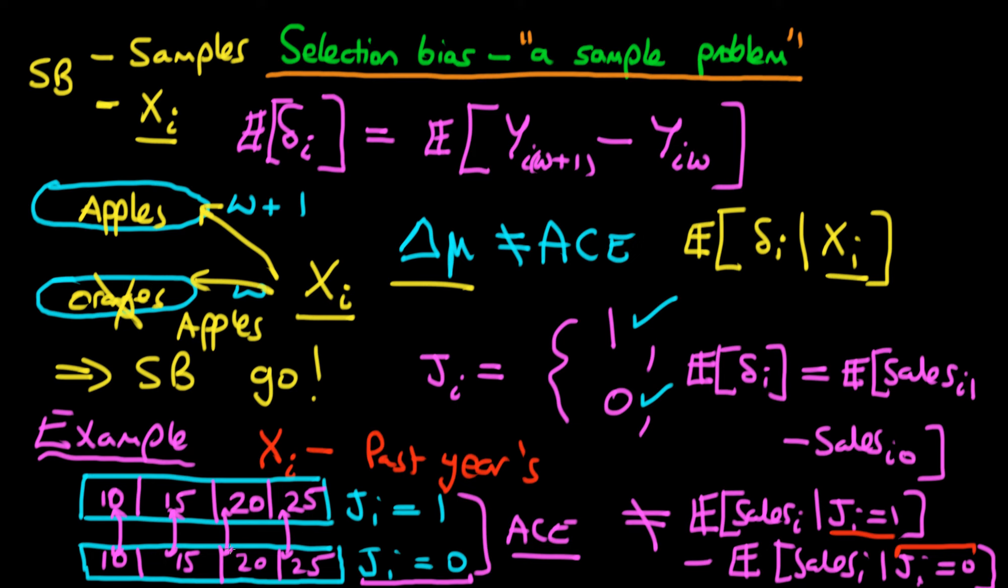So the idea is that we can remove selection bias by modifying our samples. That's going to lead us on to the discussion of matching, because essentially that's what we're doing — we're matching different samples between the treated and untreated. And it's also going to lead us to talk about propensity scores in the next few videos.